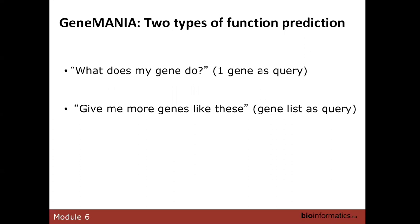GeneMania is a functional prediction tool designed to answer two questions. The first: I have one gene in my query and I want to predict the function of this gene — what does my gene do? The second: I have a gene list as input, and the question I want to answer is give me more genes like the ones in my list. So we want to expand the gene list.